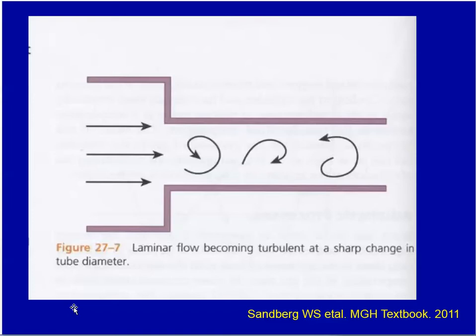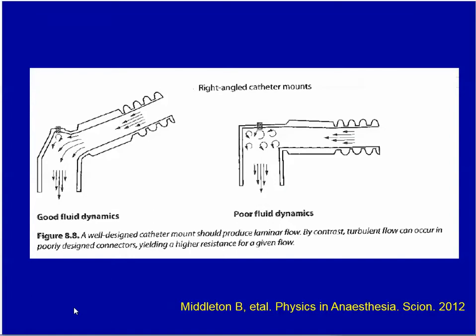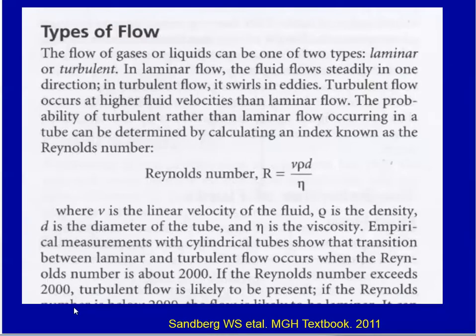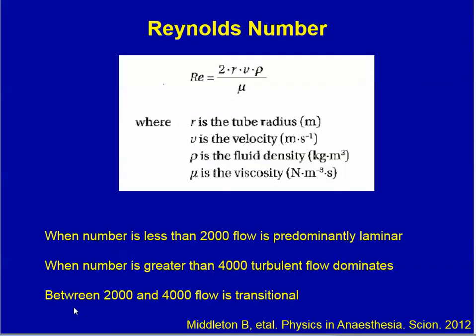Laminar flow becomes turbulent at sharp changes in tube diameter. For generalized flow, it can be described by the Reynolds number. When the number is less than 2,000, the flow is predominantly laminar; when it is greater than 4,000, turbulent flow dominates; and between 2,000 and 4,000, the flow is transitional. The Reynolds number is related to the radius of the tube, the velocity, the density, and the viscosity.